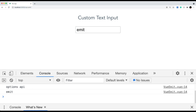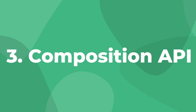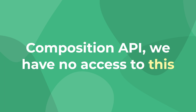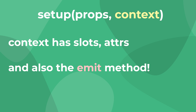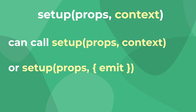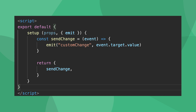The third method is emitting events in the composition API with context.emit. In the composition API, since setup runs before our component is created, we have no access to this like we do in the options API. Instead, we can access our emit method by using the second argument of our setup function, context. Context has access to your component slots, attributes, and most importantly, its emit method. We can get access to emit by either having setup take the whole context object, or getting only emit by destructuring context in our parameters. Then we can just call emit the same exact way — call emit, give it the name of our event, and pass in our arguments.